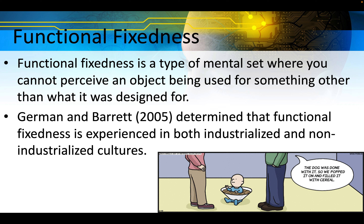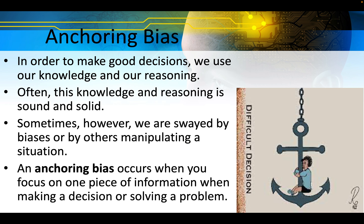German and Barrett in 2005 determined that functional fixedness is experienced in both industrialized and non-industrialized cultures. In order to make good decisions we use our knowledge and our reasoning — often this is sound and solid. Sometimes, however, we are swayed by biases or by others manipulating a situation.